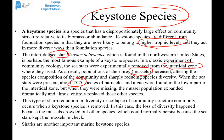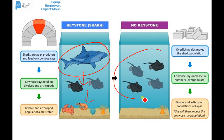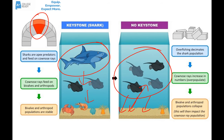Another important keystone species is the shark. Sharks feed on rays, and rays feed on bivalves and arthropods. When sharks are removed, the ray population increases dramatically — so many rays that they end up killing off lots of crustaceans, bivalves, and arthropods, causing population collapse. The term 'keystone species' comes from the keystone at the top of an arch that holds it together — if the keystone is removed, the arch falls. Similarly, if a keystone species is removed from a food chain or environment, the community falls apart.